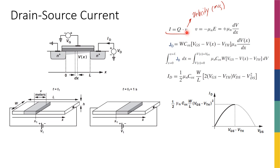What is the velocity? I know that for electrons, the velocity is negative μn times E, where E is the electric field applied. The electric field is negative dV over dx, so I get a positive μn times dV over dx for the electron velocity.